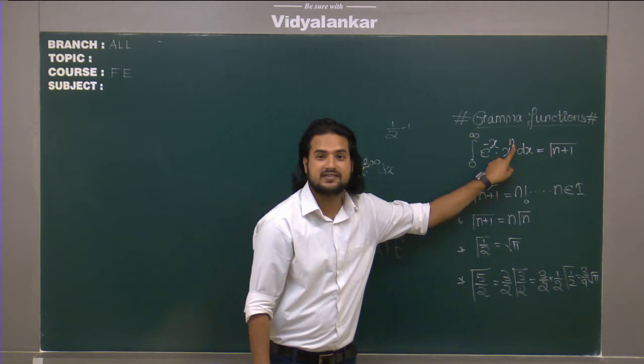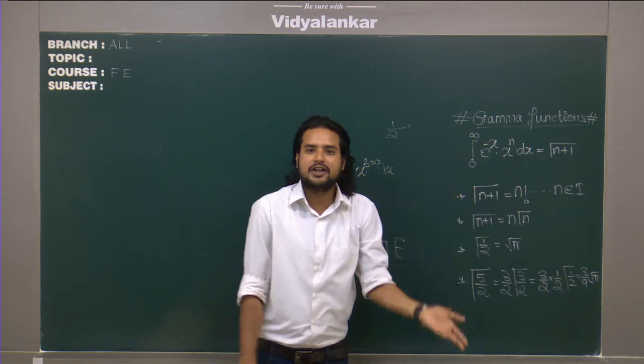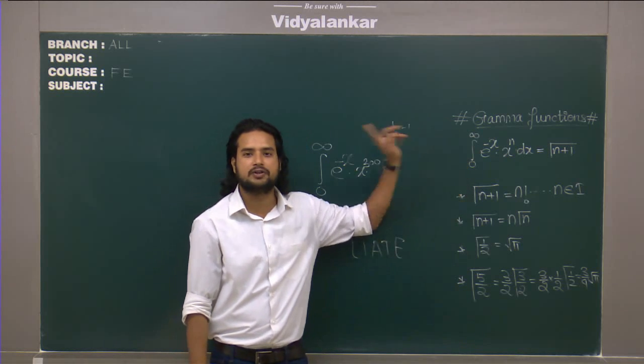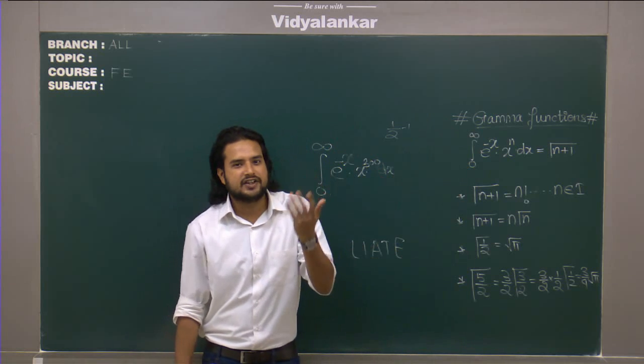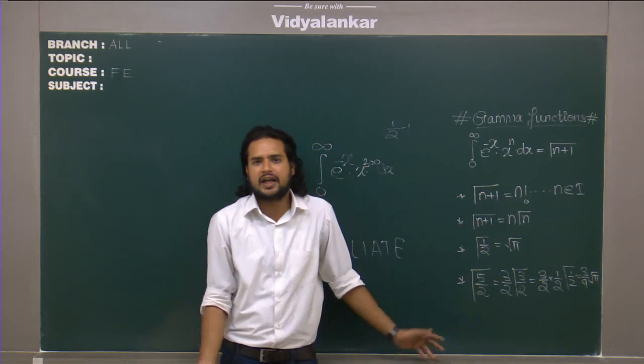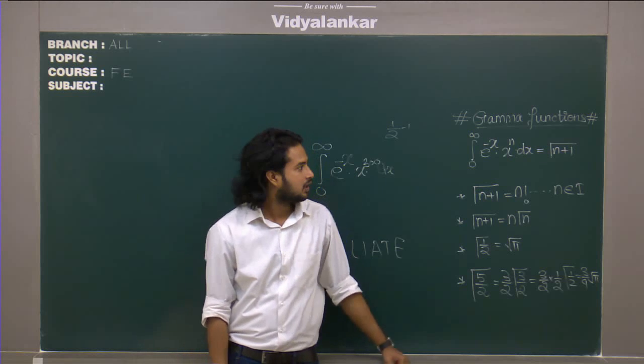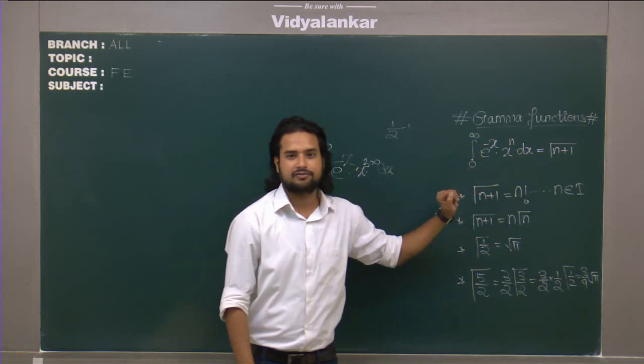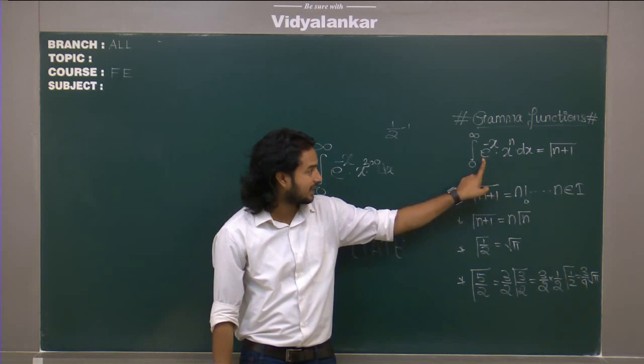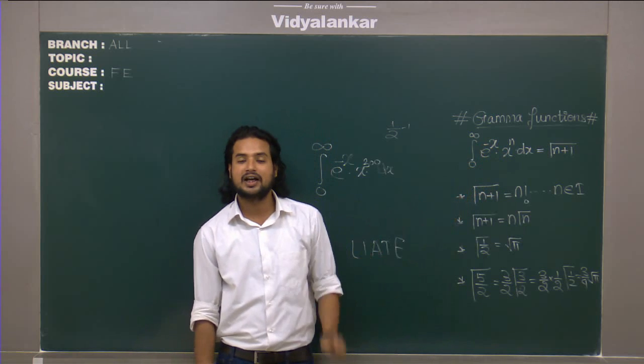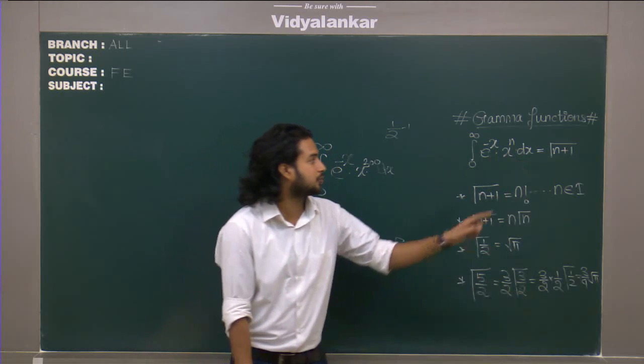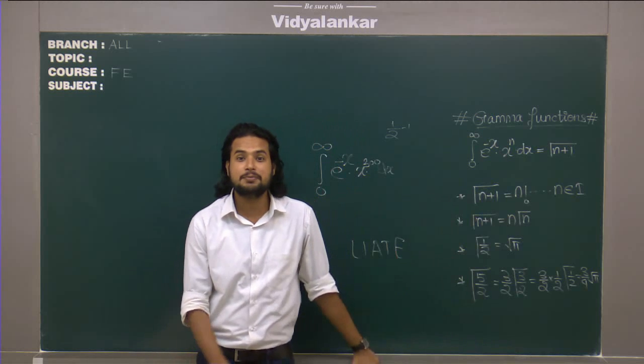That means whatever power of x is there we can actually solve that integration. So I actually don't need u into v. But there are few conditions to it. You must have limit of integration as 0 to infinity. Just in case if it is not 0 to infinity and it is something else, then you have to think what should I do so that it becomes 0 to infinity. And hence we have different types of problems in gamma functions. e raise to minus x, x raise to n dx. So the condition you must have an exponential term and you must have that exponential term like this e raise to minus x, e raise to x won't work. I need e raise to minus x, a negative power. Then x power can be anything. And that anything itself is going to give me my answer. So that's the beauty of gamma function.